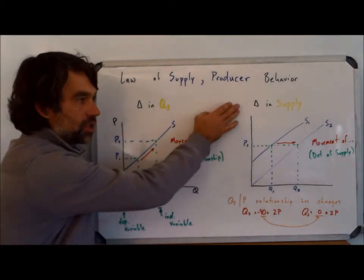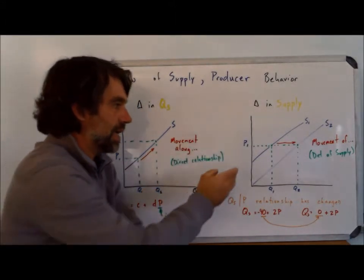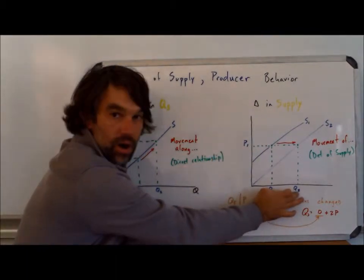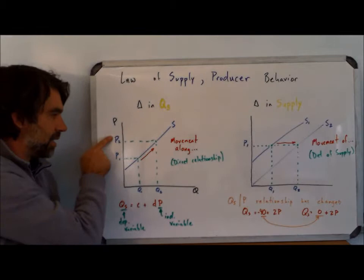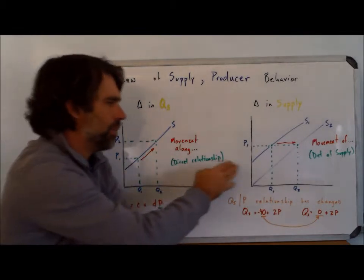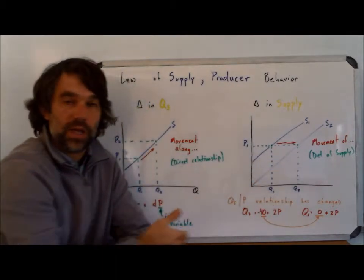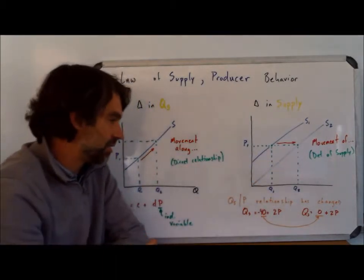When we talk about an overall change in supply, well again, now we're saying at the same price, we're willing to supply more. So here, price had to go up for me to supply more, but here, something else changed, what we call a determinant of supply, and now I'm willing to supply more at the same price.